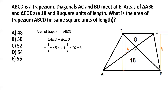Next, we consider triangles ABE and CDE. The two angles marked in blue are alternate angles formed by the transversal BD cutting the parallel lines AB and DC, so they are equal. Similarly, the two angles marked in red are also alternate angles and are equal. Therefore, triangles ABE and CDE are similar.